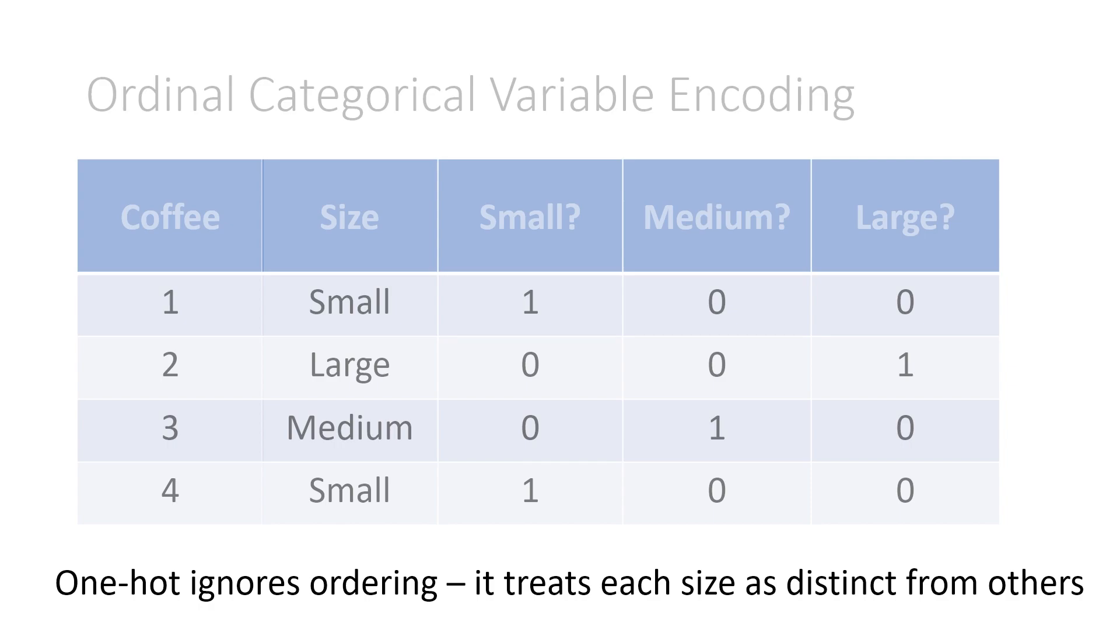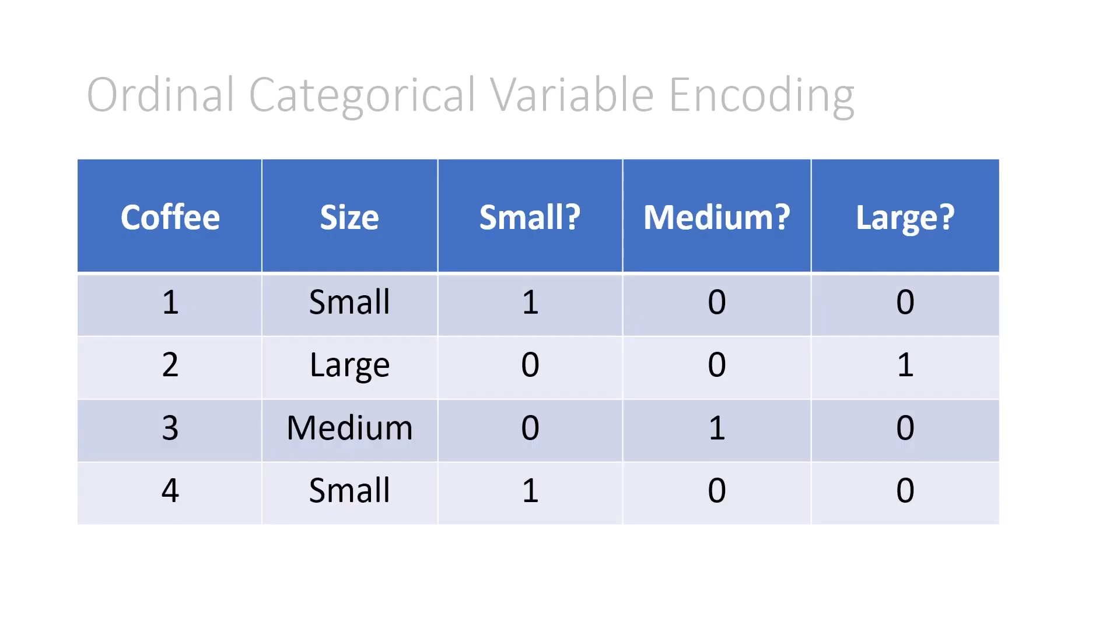The problem is that one-hot ignores ordering. It treats each size as distinct from the other ones, but this isn't really true. We know medium is bigger than small and less than large, and large is bigger than both small and medium. In this one-hot encoding here, that ordering is completely lost. They're treated completely separately.